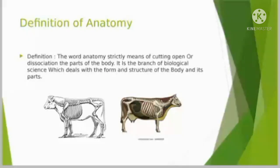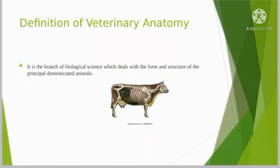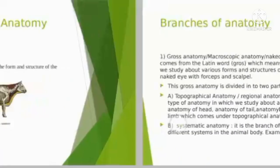Now we will move towards the definition of veterinary anatomy. Veterinary anatomy is also the branch of biological science which deals with the form and structure of the principal domesticated animals.